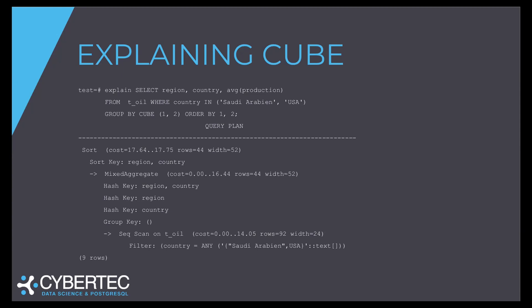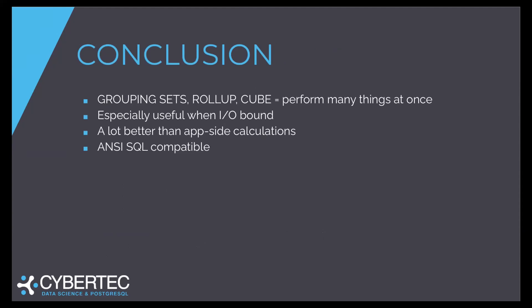To sum it up: Rollup and Cube are so-called grouping sets. You can also use the GROUPING SETS clause explicitly to be more precise about what you want to aggregate, but in most practical cases people use Rollup and Cube. As stated, the goal is to avoid IO contention and reduce IO. It's also a lot better than client-side calculations — sometimes aggregation is only possible on the server side. And after all, it's an ANSI SQL-compatible feature, available in DB2, Oracle, and of course Postgres.